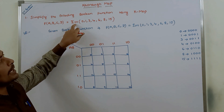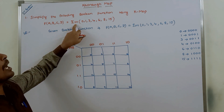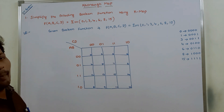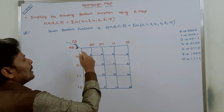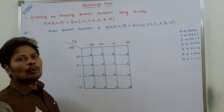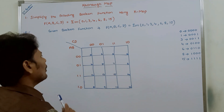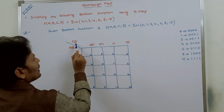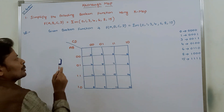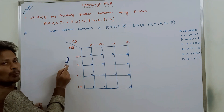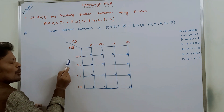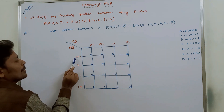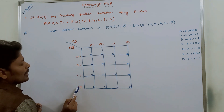To simplify the given Boolean function you have to use a 4-variable Karnaugh map. The 4-variable Karnaugh map has the following structure. On the horizontal side I am taking 2 variables, and on the vertical side I am taking 2 variables. The 2 variables can have 4 possibilities, written in the form of Grey code: 00, 01, 11, 10.